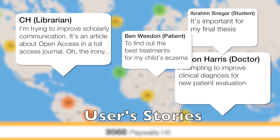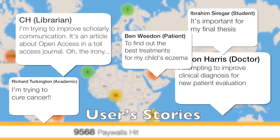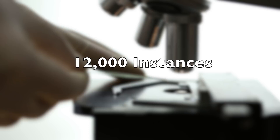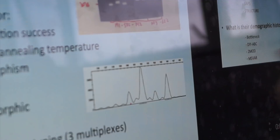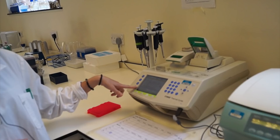Since then, the Open Access Button has helped connect users with otherwise inaccessible research articles, and made visible users' collisions with academic paywalls. The Open Access Button has recorded more than 12,000 instances of people without access to research articles. These include stories of doctors and patients who cannot access research about diseases and their treatment, and stories of researchers and members of the public unable to access research they need to work, learn, and understand the world around them.